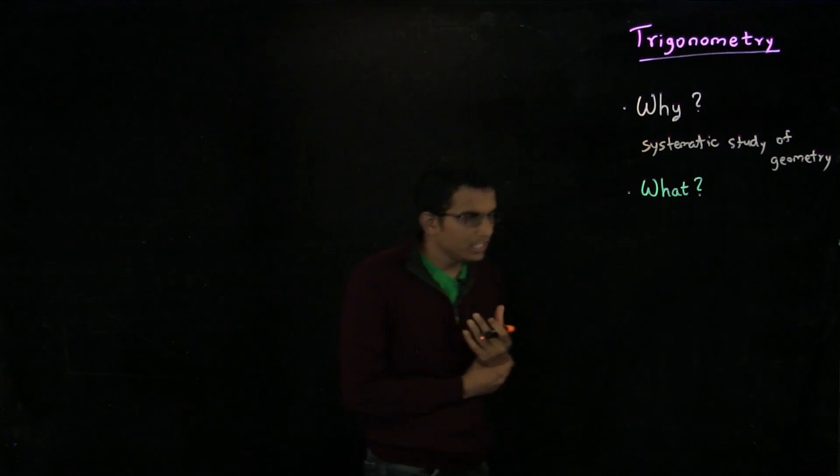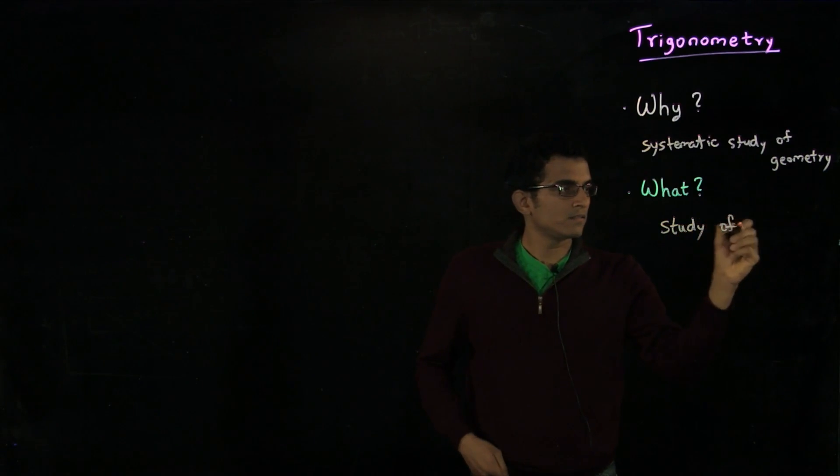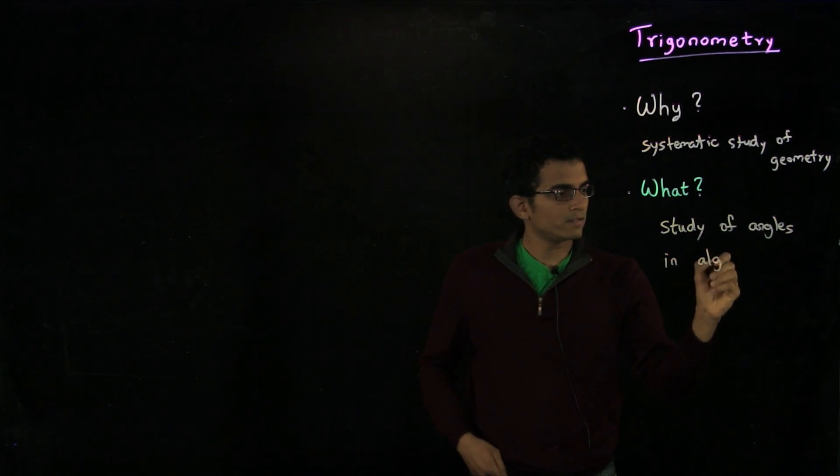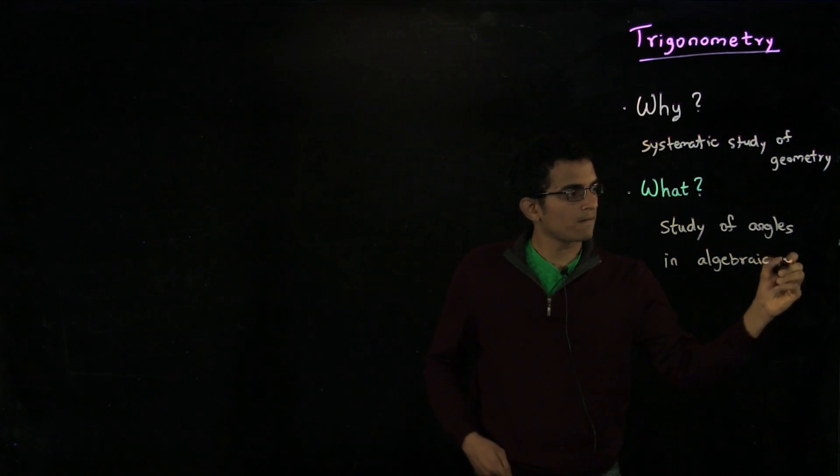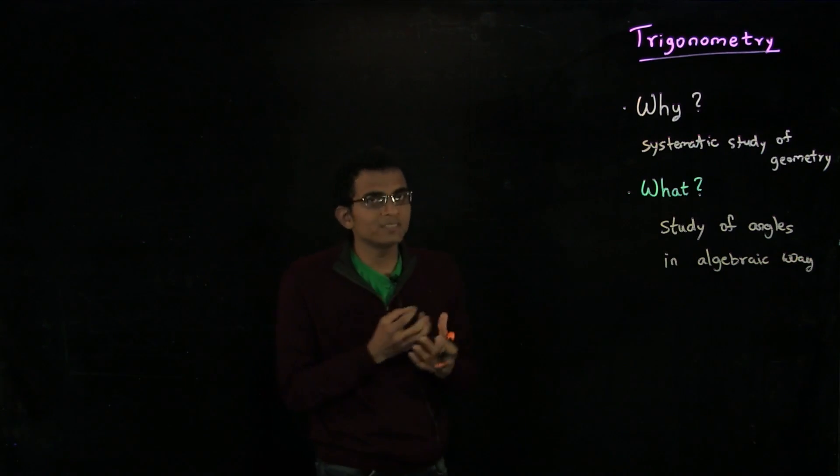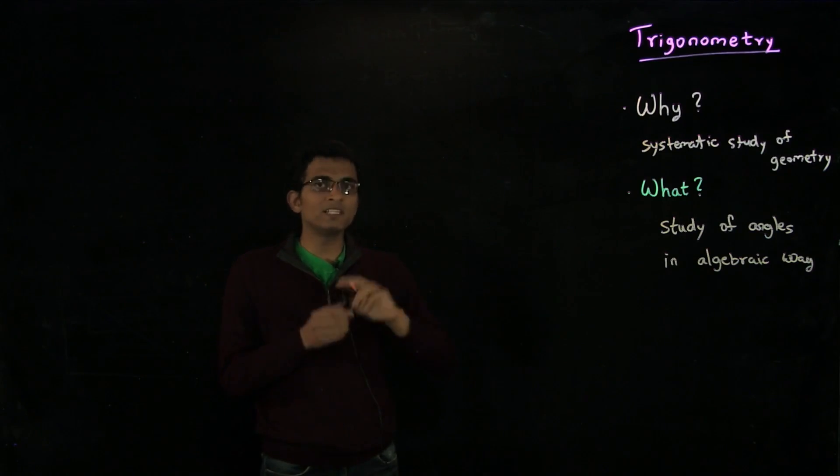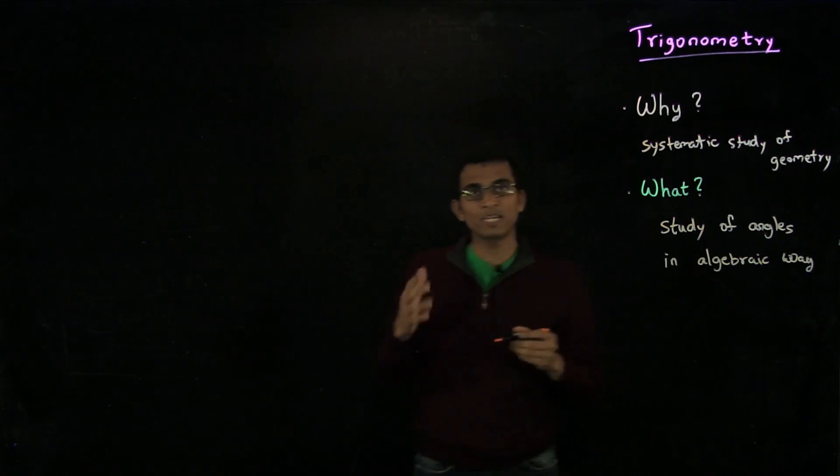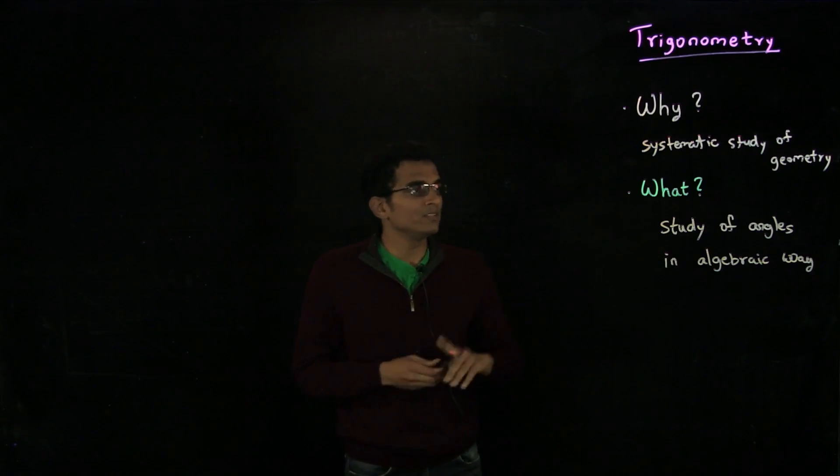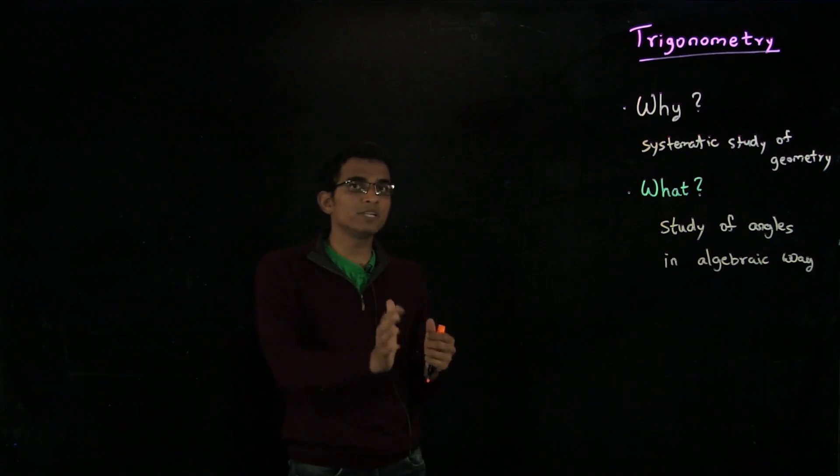And what is trigonometry? Trigonometry is about a study of angles in an algebraic way. You would know that algebra, you would feel more comfortable doing algebra. Algebra is often something you can do in a more mechanical way, whereas geometry often requires a sort of innovative leap. Using trigonometry, you will be able to reason about geometric problems in a more algebraic way.